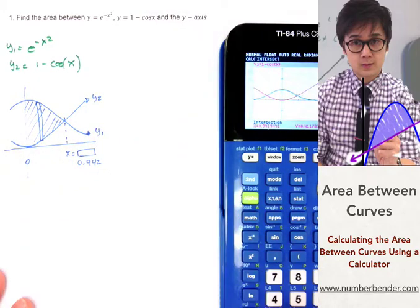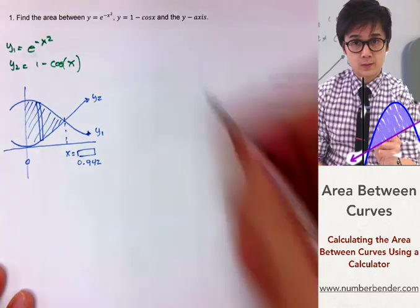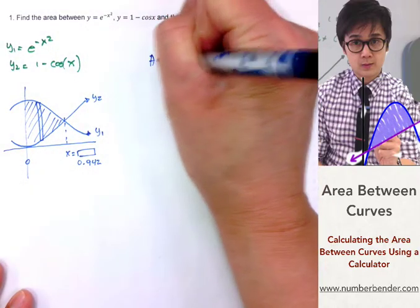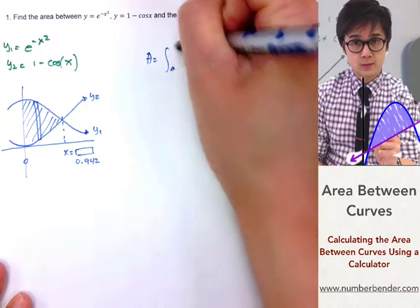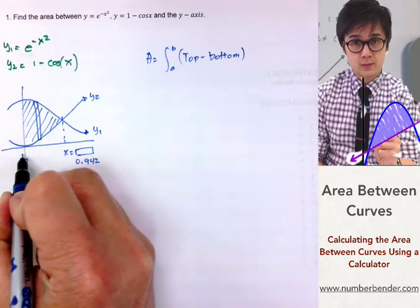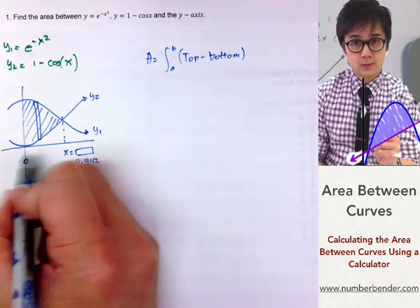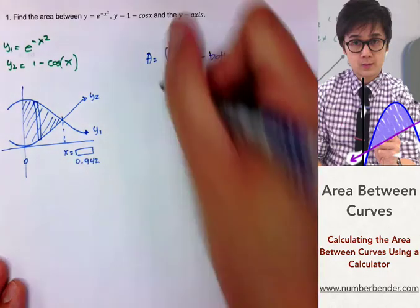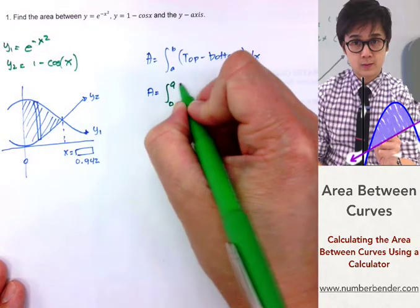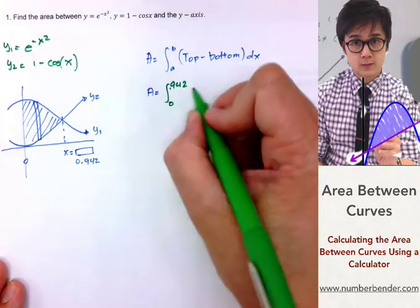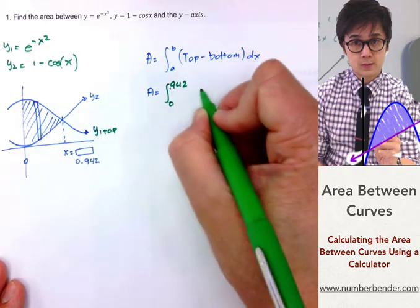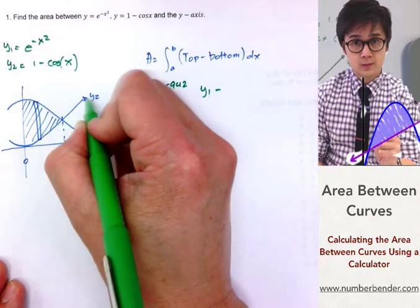Now that we have all the things that we need, we can start writing out the integral function. Find the area, it's top minus bottom. Since we are using the limit from 0 along the x-axis, we'll use dx. The area by substitution will have the integral from 0 to 0.942 of the top function, which is y sub 1, minus the bottom function, which is y sub 2, dx.